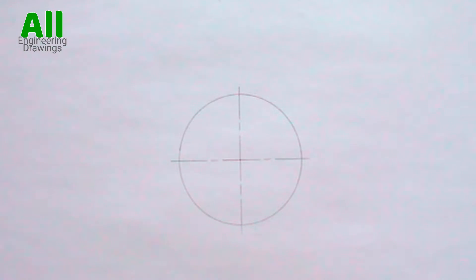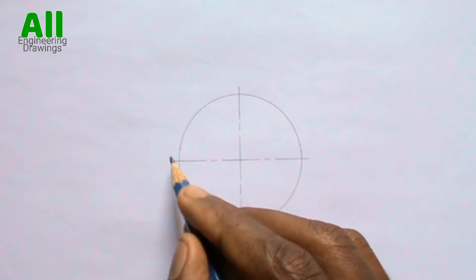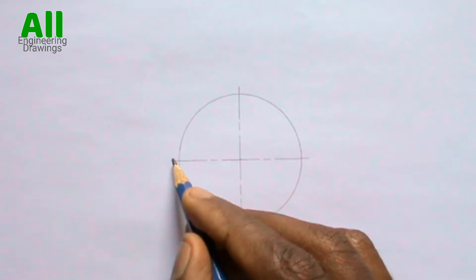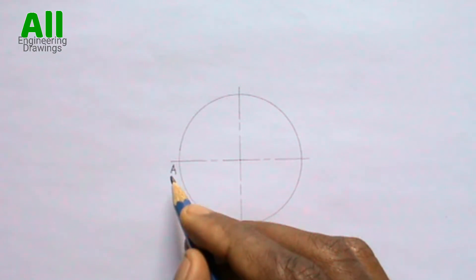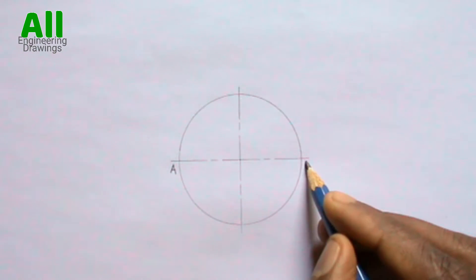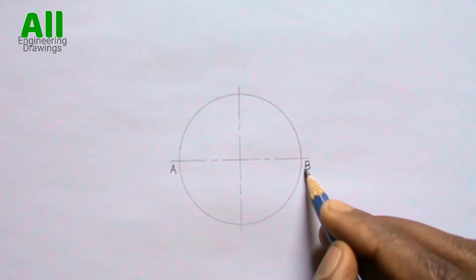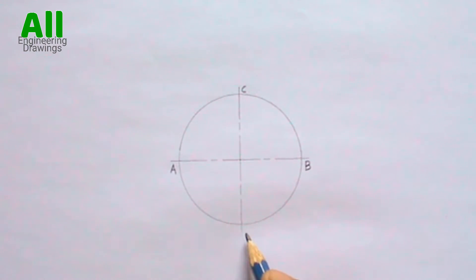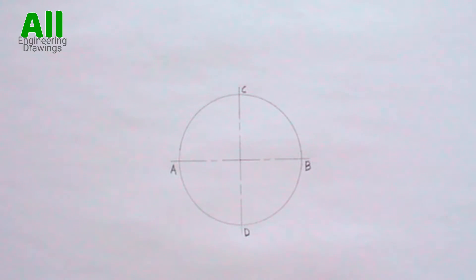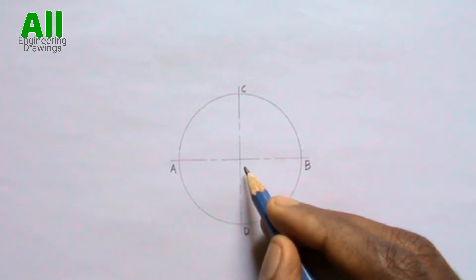Label the points where lines of division intersect the circumference of your circle. Also label the center of your circle.